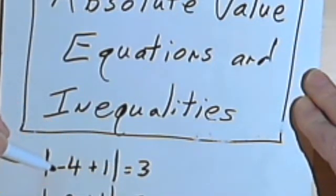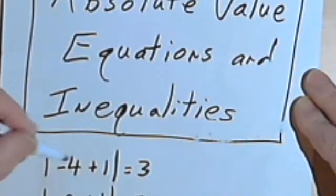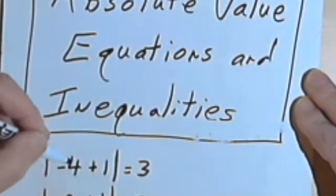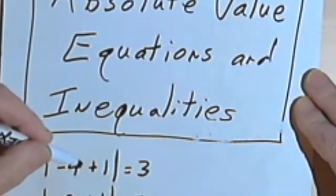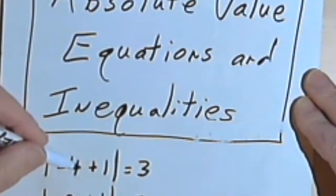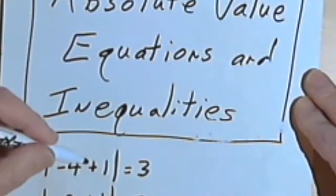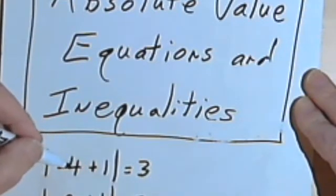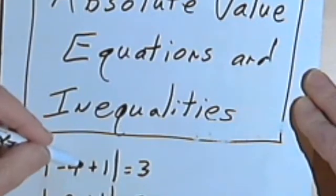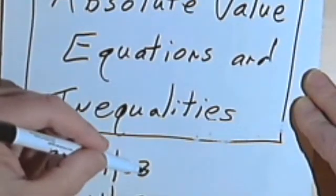The way absolute value works is whatever is in between the absolute value signs, you evaluate that. So I evaluate negative 4 plus 1 and I get negative 3. And then whatever your answer is, you make it positive. So negative 4 plus 1 is negative 3, I make it positive and I can write equals 3.